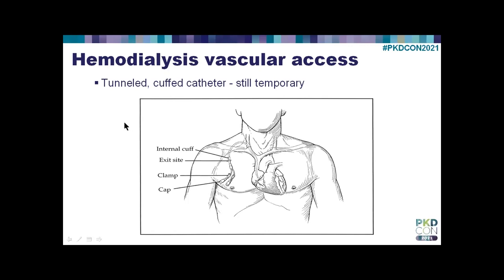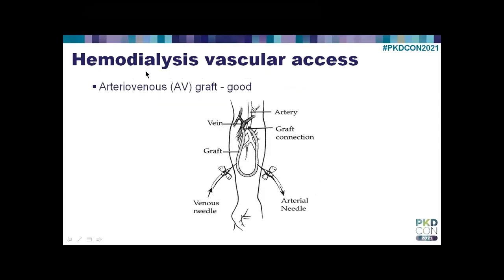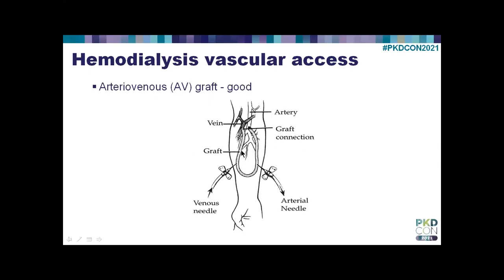Somewhat better long-term is to use an artificial blood vessel—what we call a graft. With a graft, we're connecting artery to vein with an artificial blood vessel. We like to leave it in place for a week or two for healing, and then we put one needle in to withdraw the dirty blood and a second needle to return the clean blood, only when you're on dialysis. In between dialysis, there's nothing there but skin. A graft is a better way of doing dialysis than a tunneled catheter, but they have a finite lifetime—they'll last three or four years if you're lucky.